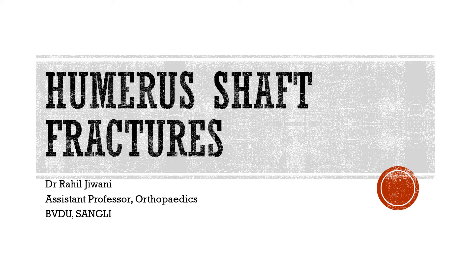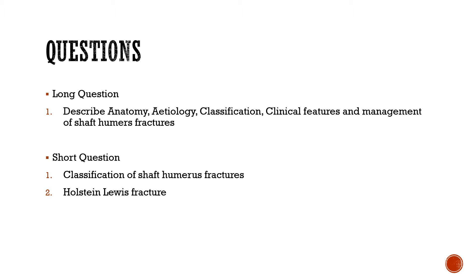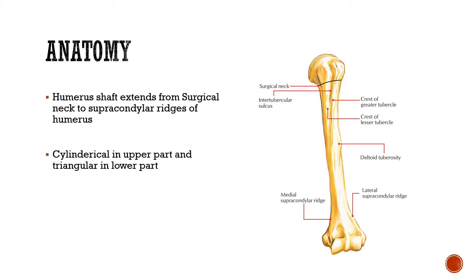Hello everyone, today we'll be discussing humerus shaft fractures, part of upper limb trauma. It's a short topic. Questions that can come on this topic include a long question describing anatomy, etiology, classification, clinical features, and management of shaft humerus fracture, or a short question on classification or a short note on Holstein-Lewis fracture. We'll be discussing both in the slides to come.